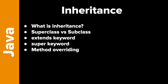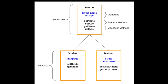So the first thing is: what is inheritance? Here's a little chart to show what that looks like. Basically, what we're trying to say with inheritance is we're trying to organize our classes and objects into a hierarchy. You can see here that a Person has a name and an age. We have our mutator methods (setters) and accessor methods (getters). The Person class is going to be what's called our superclass. And then below the Person class, we have two subclasses: a Student and a Teacher. So a student is a person, and a teacher is a person.